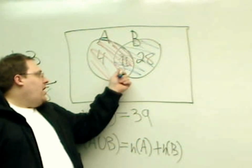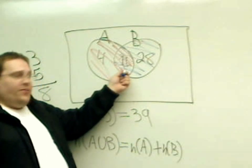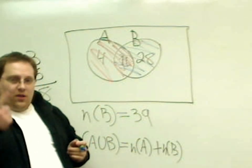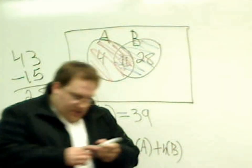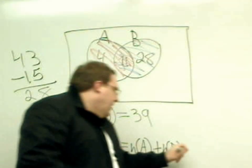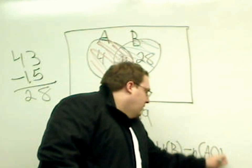Trouble is, I already counted that region once. So now I've double counted it. I have to subtract out that intersection, one of those intersections, because I've counted it twice already. So the last part to my formula will be minus the number of things that are in A intersect B.